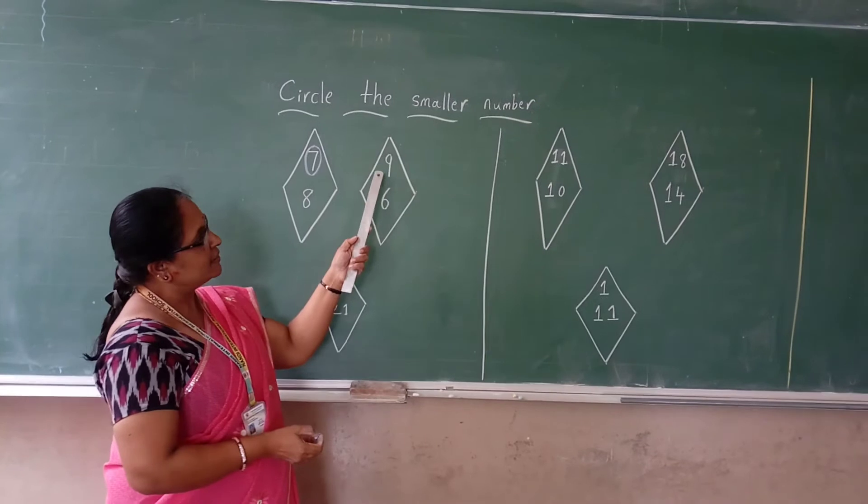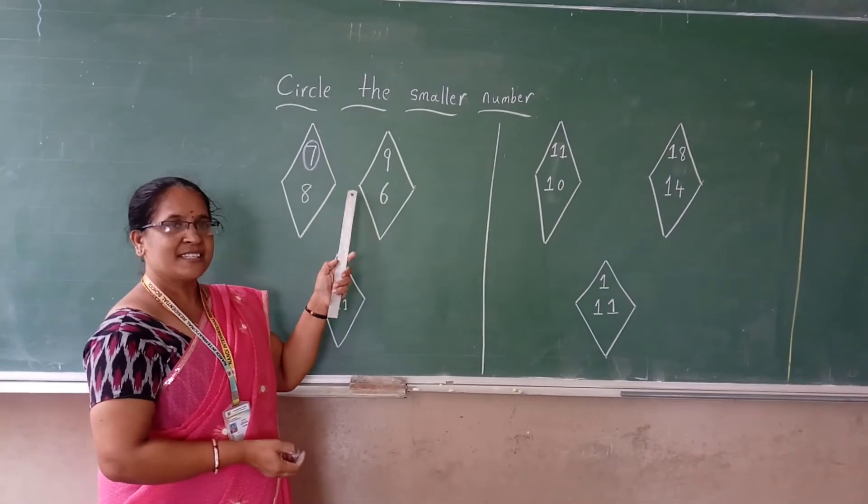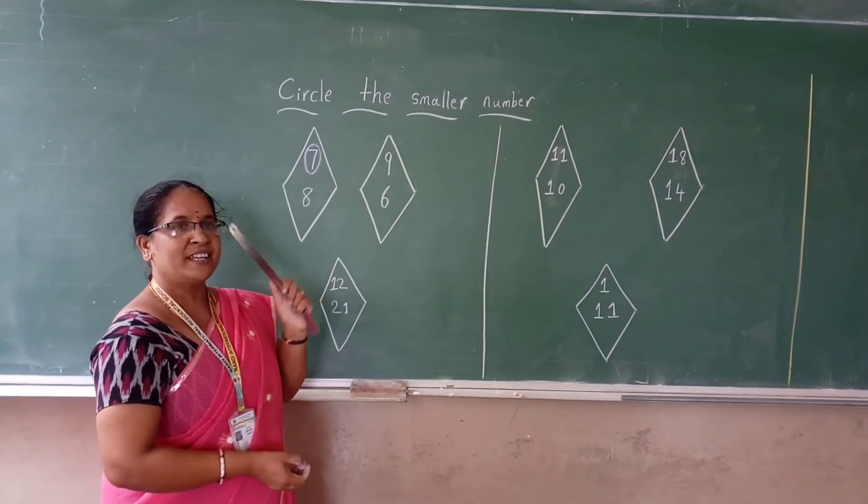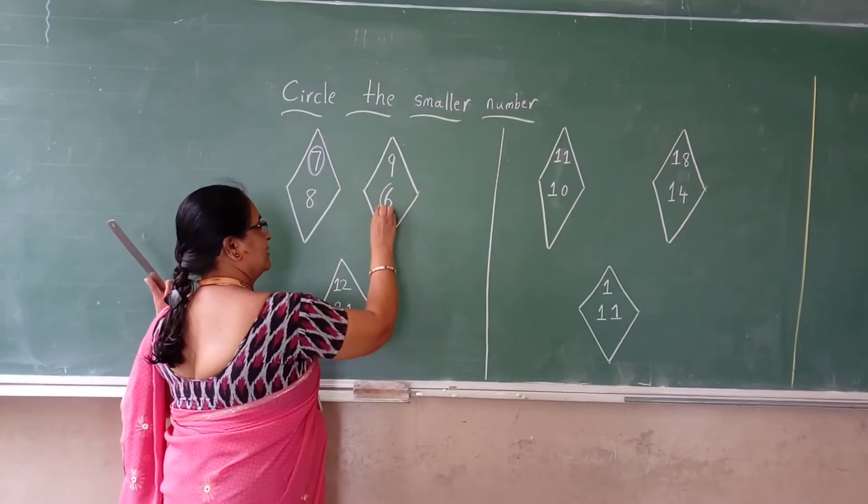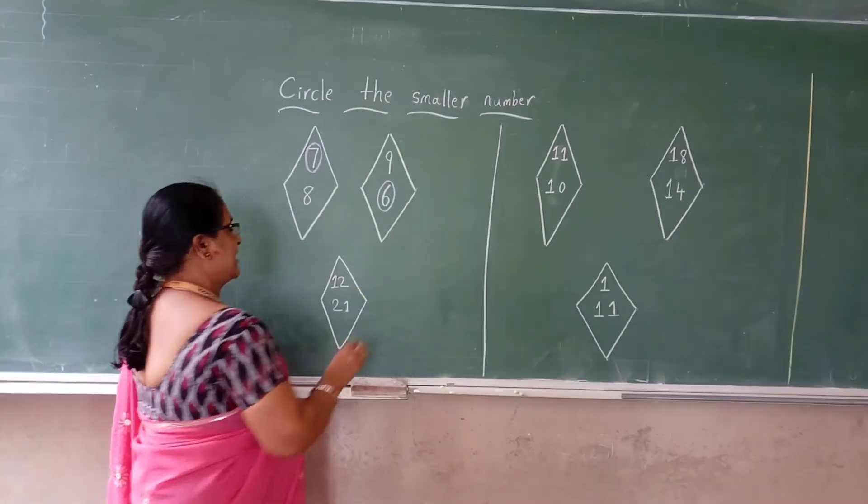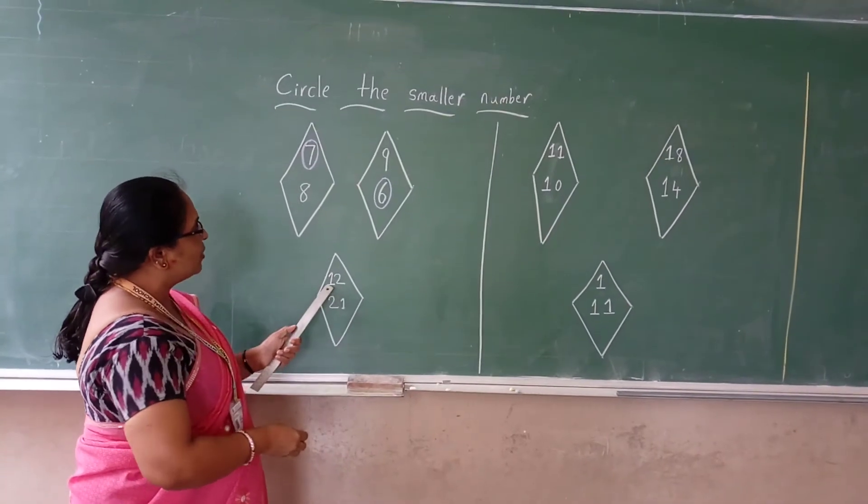Then in another box, 9 and 6 is given. Yes or no? Which one is the smaller number here? Tell me. 6. Very good. Which one is the smaller number? 6.